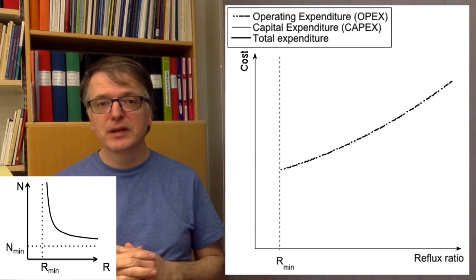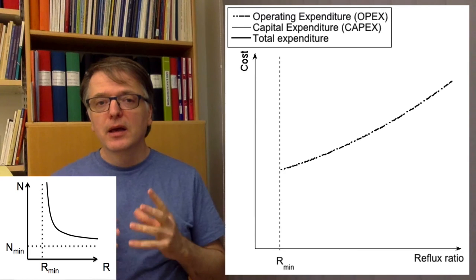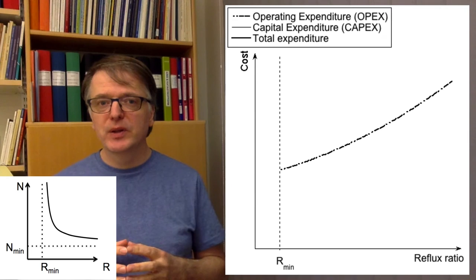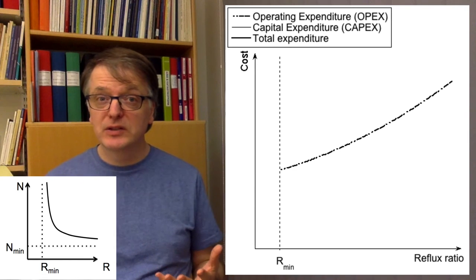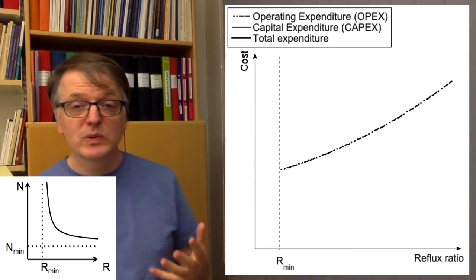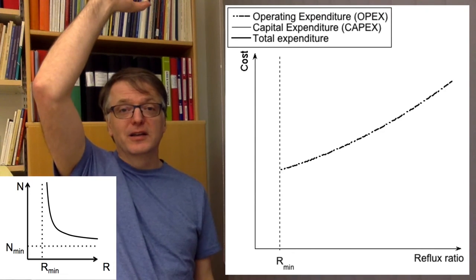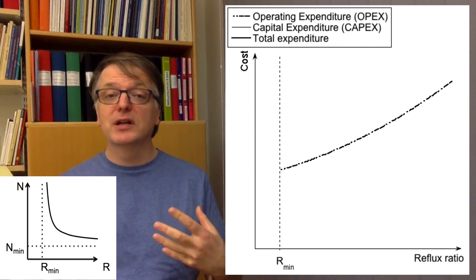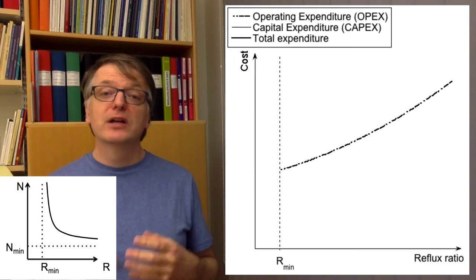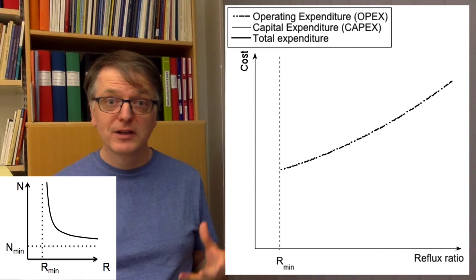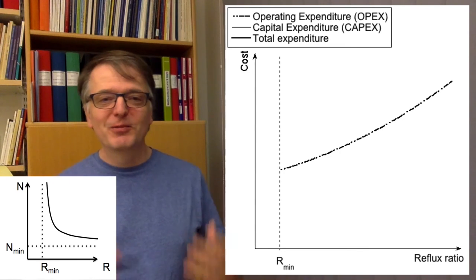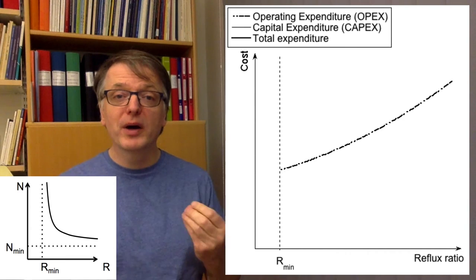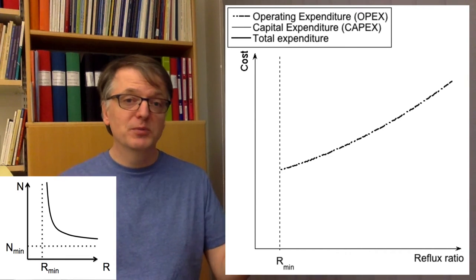What about capital expenditure? If we start at Rmin, the minimum reflux ratio, and want to build a distillation column that works there, we need to make it infinitely tall — an infinite number of equilibrium stages and thus an infinite number of physical trays. The more trays you need, the higher the capital expenditure — the more money you need to put into iron or whatever material the column is made from.